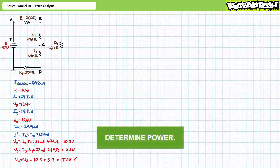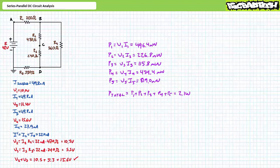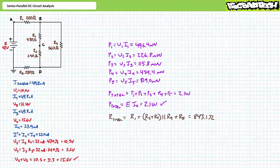All we need to do now is solve for power. P1 equals 496.4 milliwatts, P2 equals 226.8 milliwatts, P3 equals 115.8 milliwatts, P4 equals 434.4 milliwatts, and P5 equals 819 milliwatts. Total power equals P1 plus P2 plus P3 plus P4 plus P5, yielding 2.1 watts — confirmed by supply voltage times source current. If you calculate total resistance seen by the source, it is roughly 843.1 ohms — also confirmed by Ohm's law. I've got a reasonable degree of confidence our answers are correct.